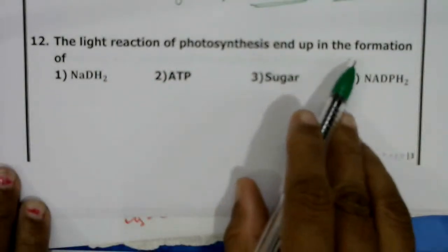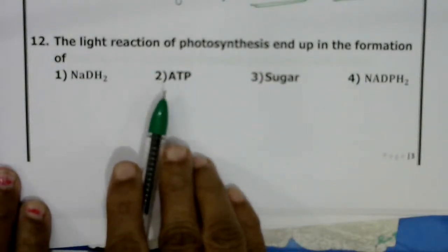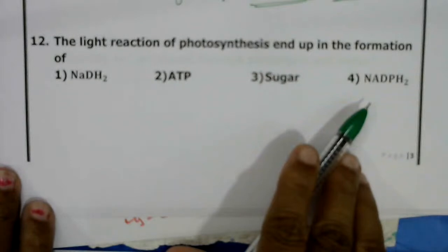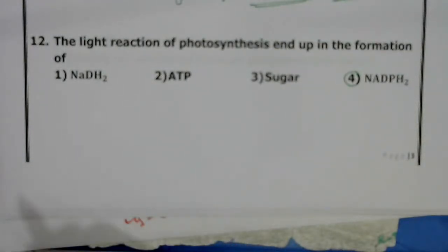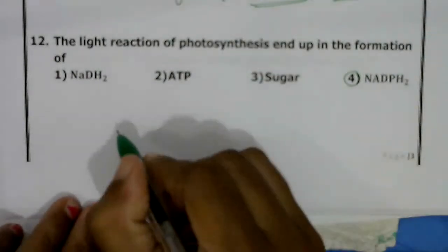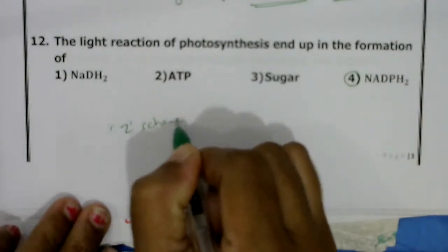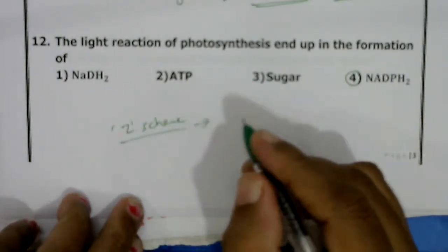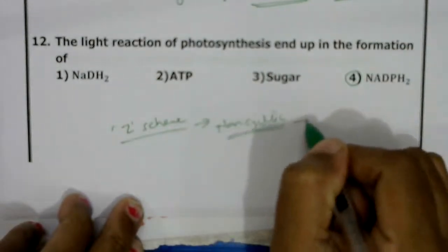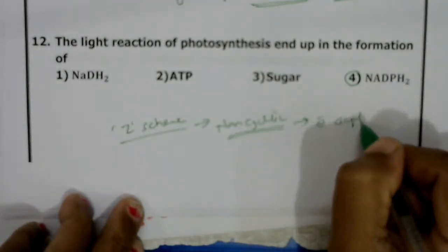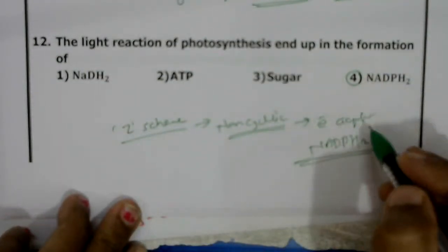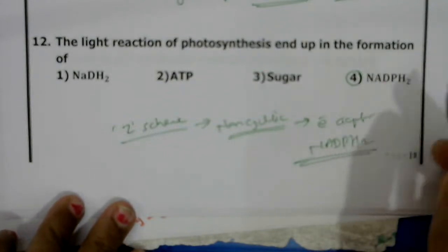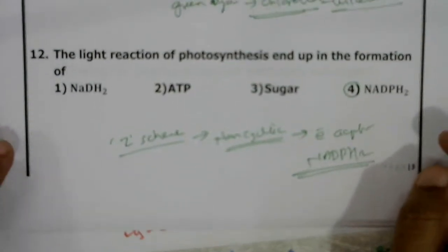The light reaction of photosynthesis ends in formation of NADH2, ATP, sugar, or NADPH2? During the light reaction, light energy is captured and ATP and NADPH2 are formed. It involves the Z-scheme and photophosphorylation. During non-cyclic photophosphorylation, the final electron acceptor is NADP, which gets reduced to NADPH2. So NADPH2 is the end product of the light reaction. Correct answer: fourth option.